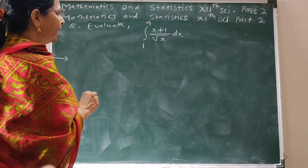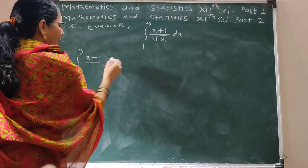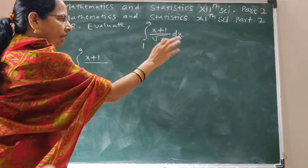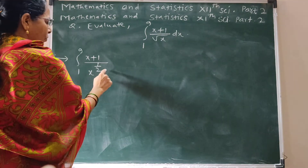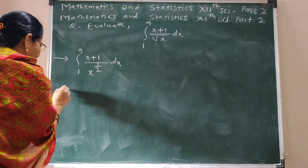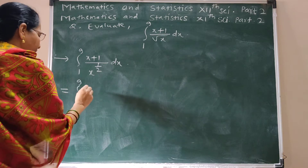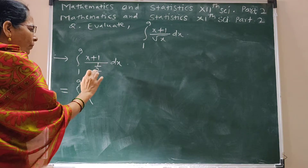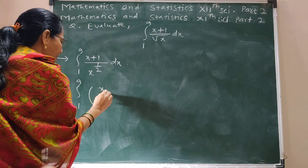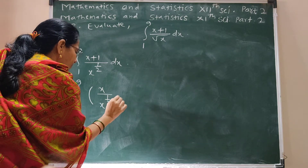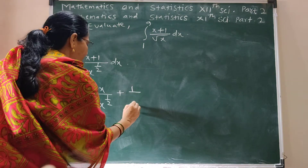For solving this integration, first write the integral from 1 to 9. Write root x in the form x raised to half. In the bracket, take x upon x raised to half, plus 1 upon x raised to half, dx.